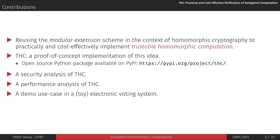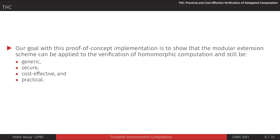We use THC to perform security and performance analysis of this scheme, and then a demo use case where it would make sense to use it. Our goal with our implementation is to show that the countermeasure is generic — not tied to a particular homomorphic cryptosystem — that it is secure, meaning a really high probability of detecting an integrity violation; cost-effective, meaning it won't significantly alter performance; and practical, meaning it is easy to use and requires few code modifications.